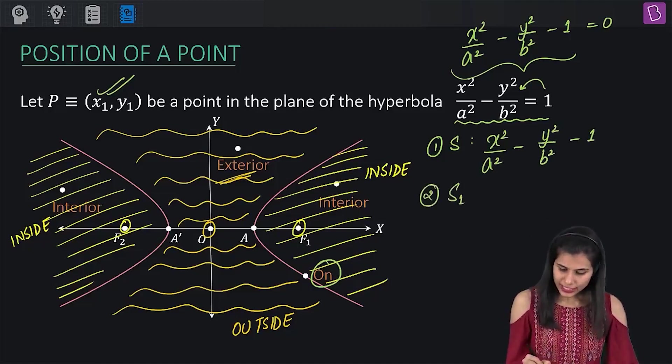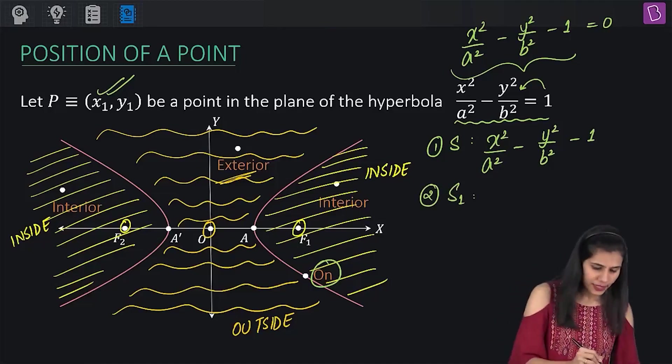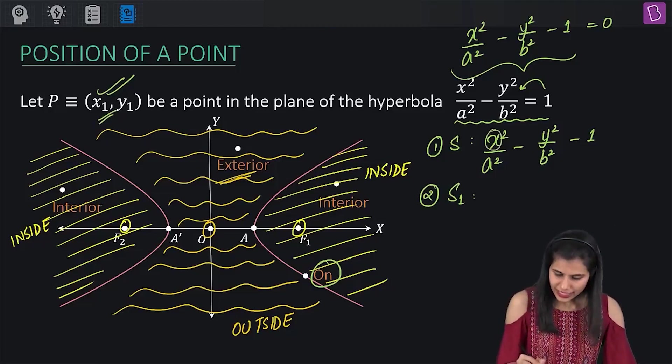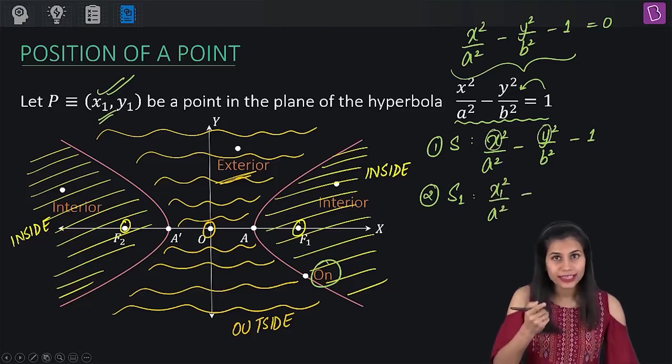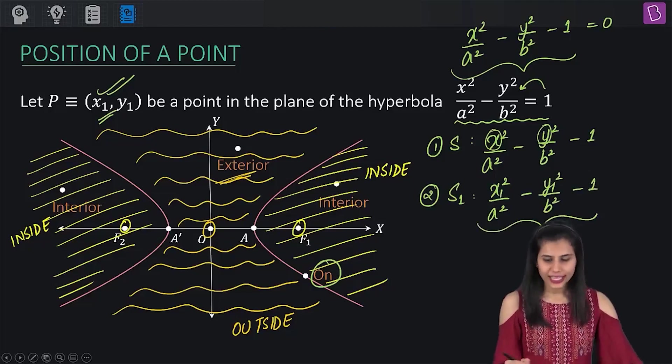Step 2 says compute S1, which is the value of S at point P, that is your given point. So what I'm going to do for that, in place of x, I'm going to plug in x1. In place of y, I'm going to plug in the y coordinate of P, that is y1. And thus, the expression that I get is actually a fixed real number, which is my S1.